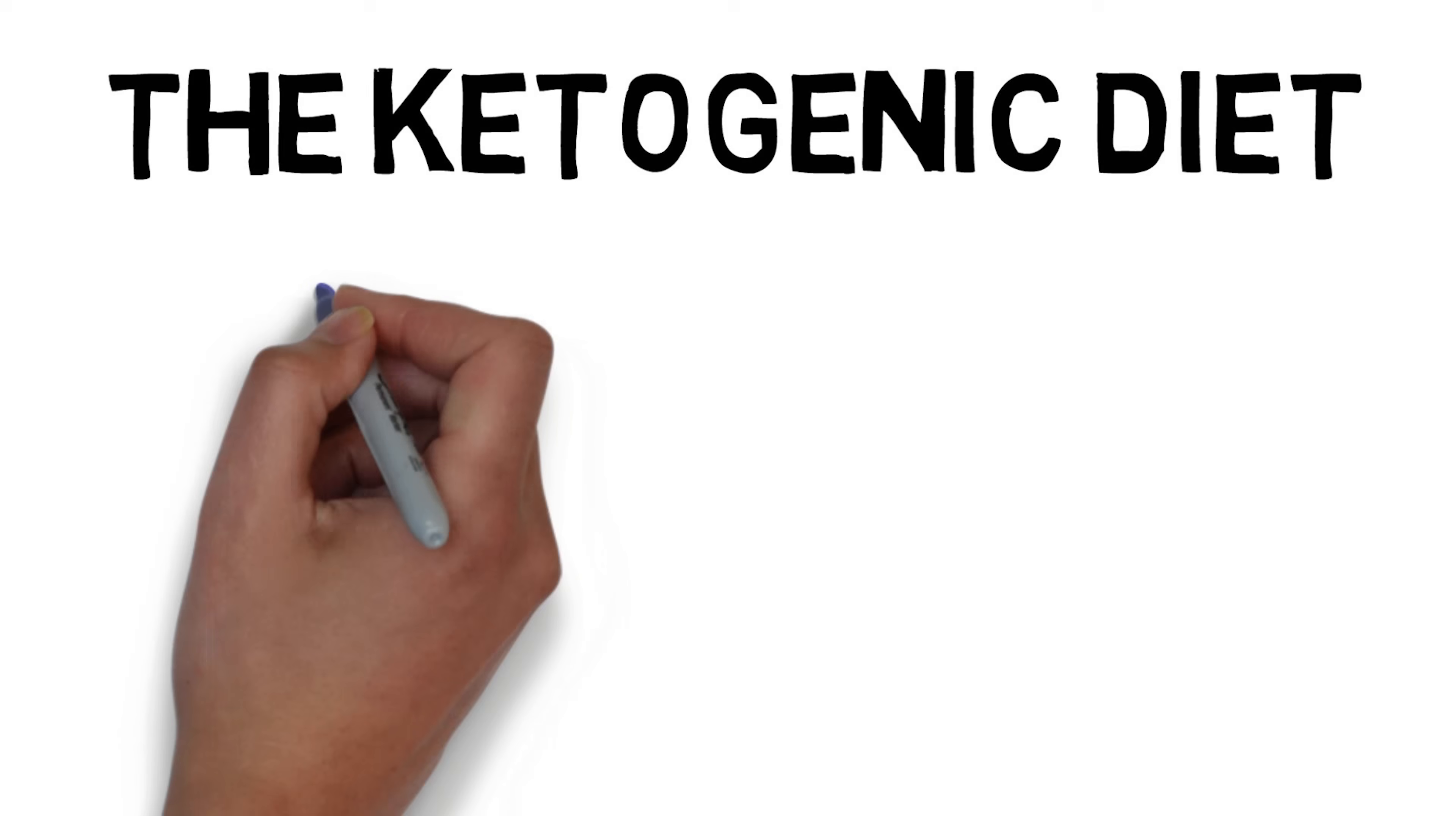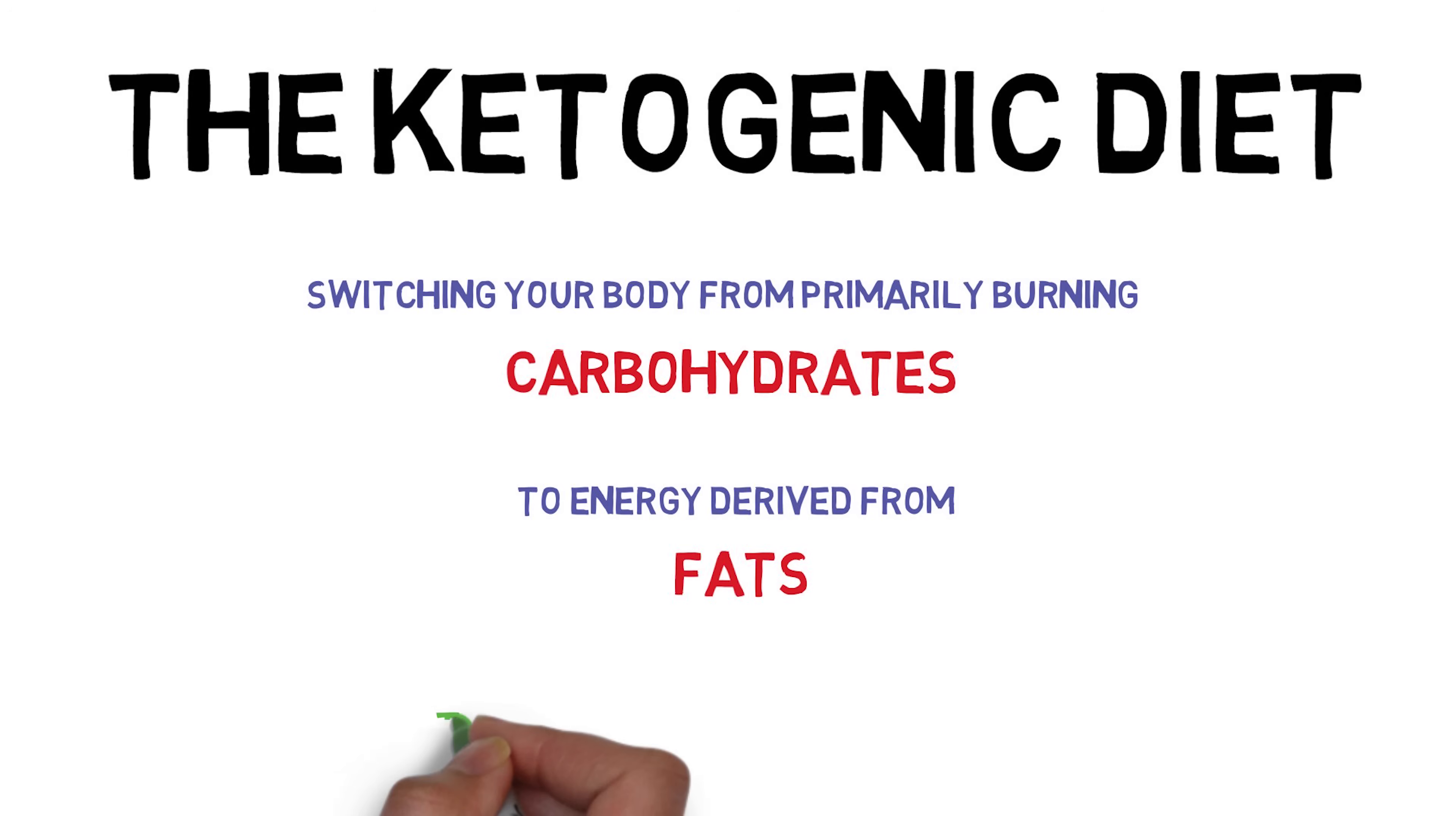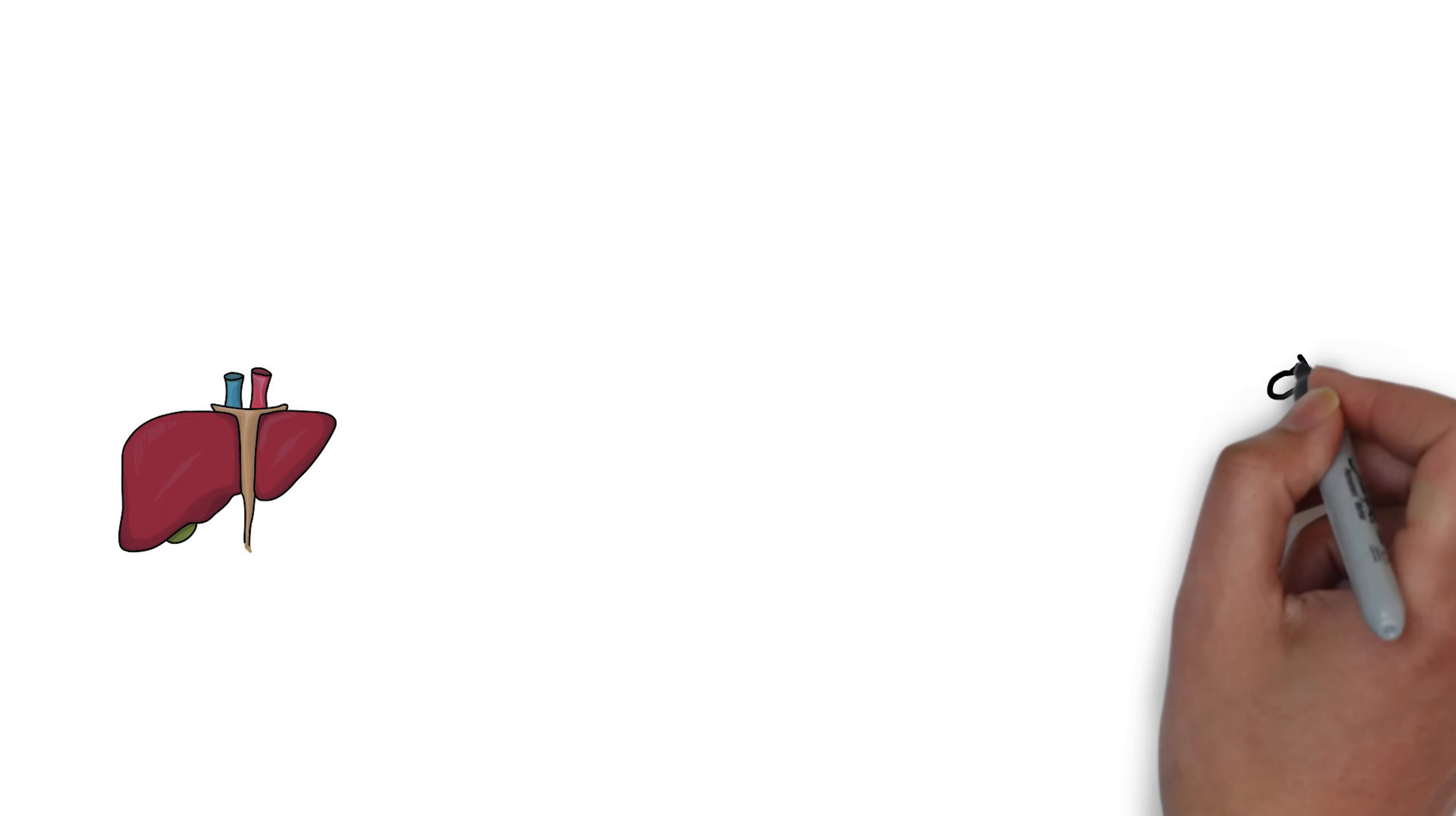All the while, your body is constantly trying to predict which fuel it will have to send to your cells next. Your body reacts to this chaos the best way it knows how, by sending powerful hunger signals to you, hoping this will increase the available fuel. So, if part of the problem is that your body keeps trying to use glycolysis, what would happen then if we just stopped sending any carb fuel?